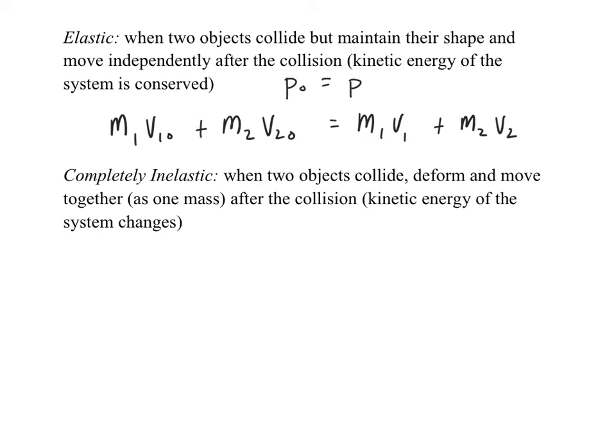The opposite is inelastic collisions. Completely inelastic collisions are when objects collide, deform, and move together as one mass after the collision. The equation is: m1v10 + m2v20 = (m1 + m2) × V_final. We did an example last class — a person jumps into a cart and they start moving together. That was an inelastic collision. Completely inelastic is when they physically fuse into one object afterward.